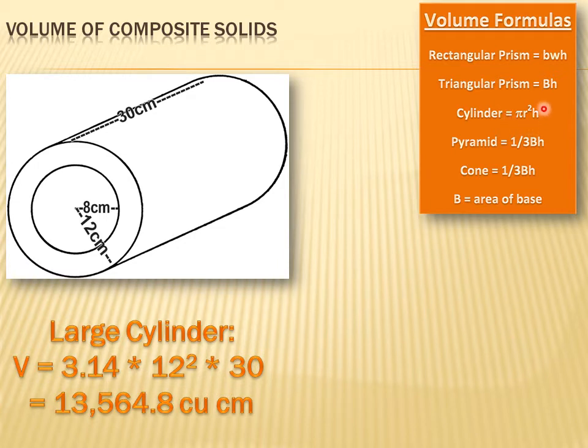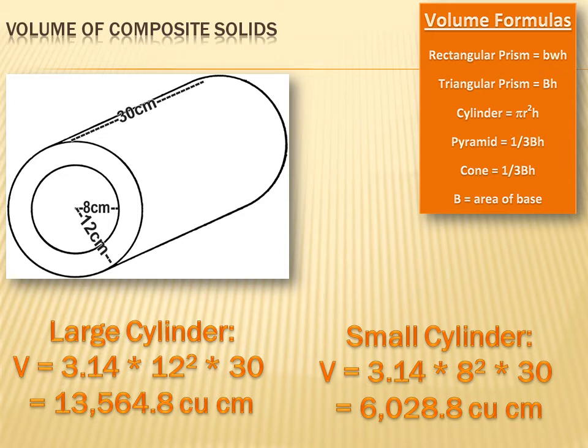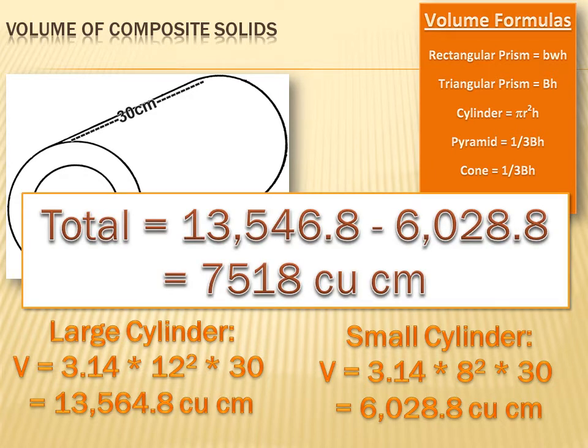The formula for a cylinder is pi r squared h, so the volume of the larger cylinder is pi times the radius squared times the height, or 13,564.8 cubic centimeters. The smaller cylinder has the same formula, pi r squared h, but the radius is different. It's only 8 inches. And the smaller cylinder's volume is 6028.8 cubic centimeters. Now, to calculate the volume of the composite figure, I need to subtract the smaller cylinder from the larger cylinder. And I come up with 7518 cubic centimeters.